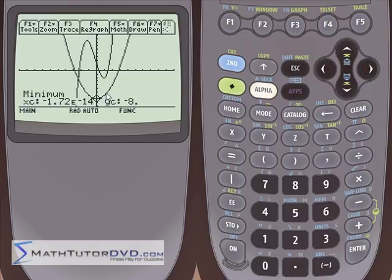What it's doing is searching that window, and it finds the exact maximum at X is equal to negative 1.72 times 10 to the minus 14, Y is equal to negative 8. Now when you get a number in this calculator that's so small, negative 1.72 times 10 to the minus 14, don't worry about that. That's an incredibly small number, which basically means X is equal to 0.